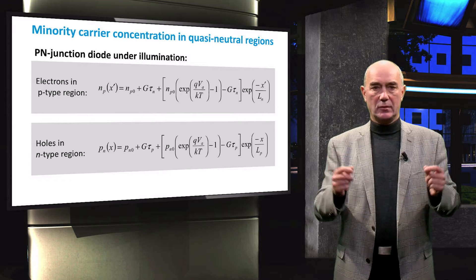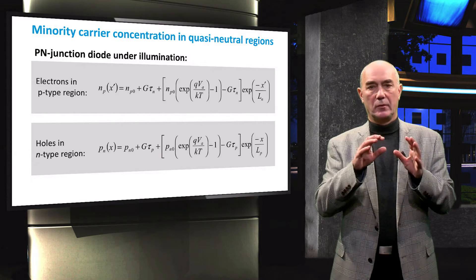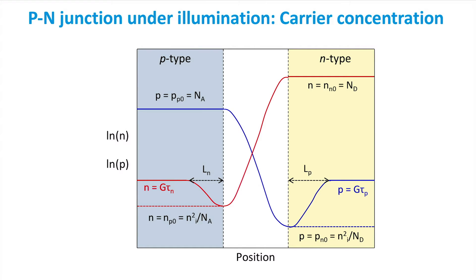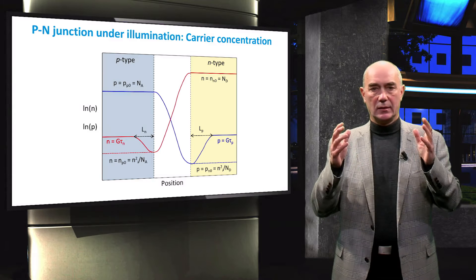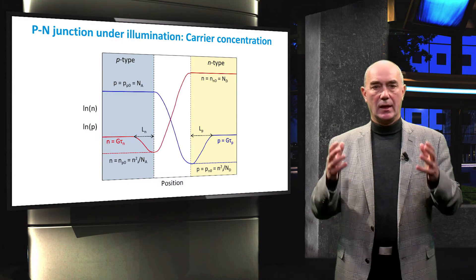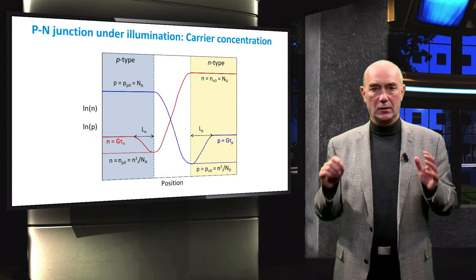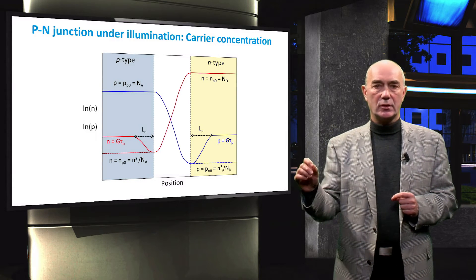To get a view of the minority carrier distribution, we can plot the carrier concentration profile for an illuminated P-N junction when there is no voltage applied. This is the carrier concentration profile in short-circuit condition. The vertical axis is the carrier concentration on a logarithmic scale and the horizontal axis is the position in the P-N junction. When illuminated, electron-hole pairs are generated. Assuming uniform generation rate, there is a large increase in minority carrier concentration, while the majority carrier concentration remains almost the same as at thermal equilibrium.